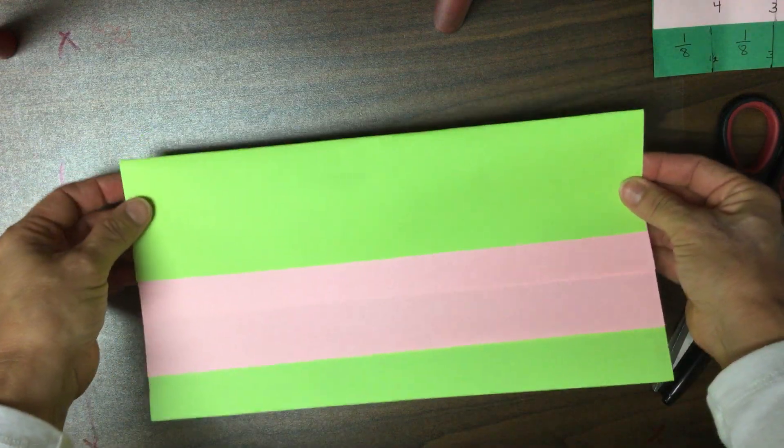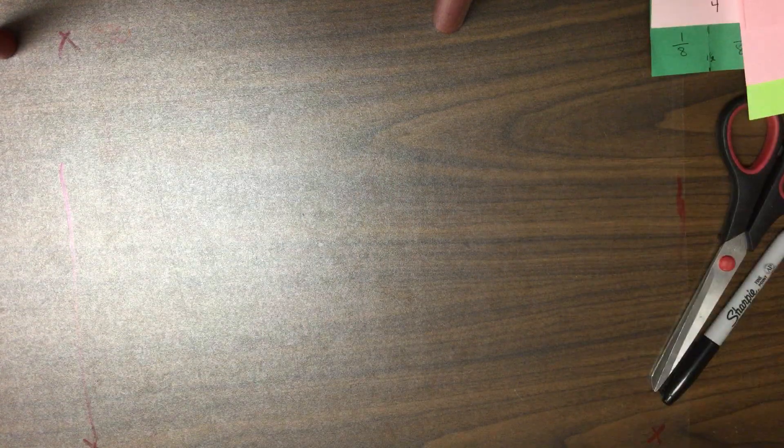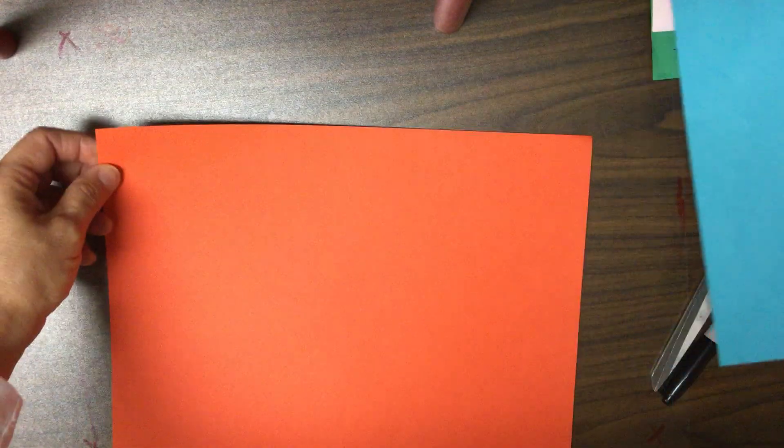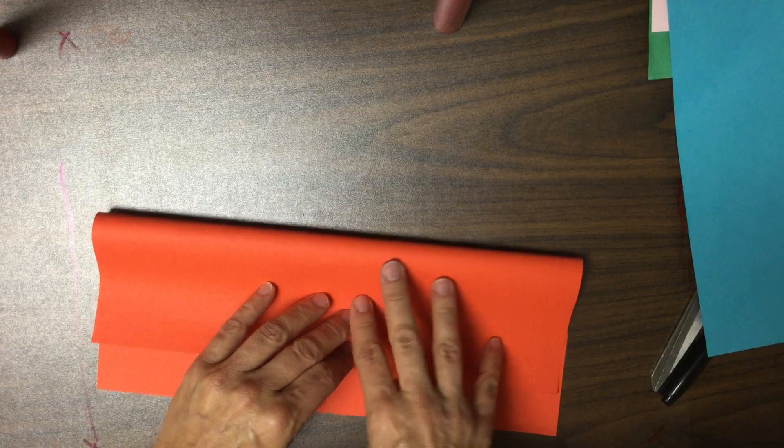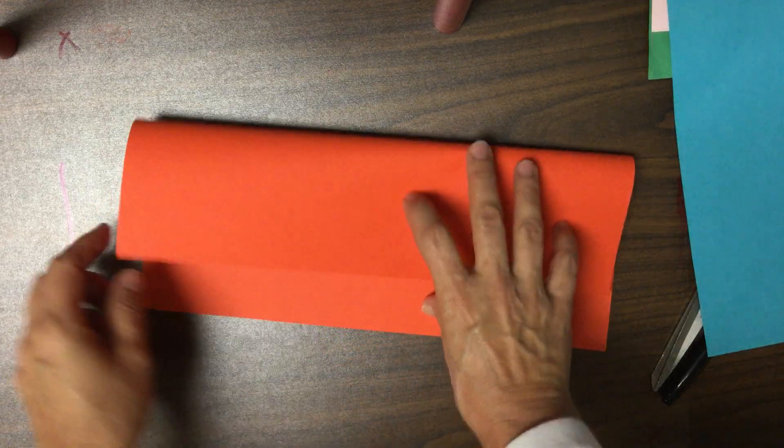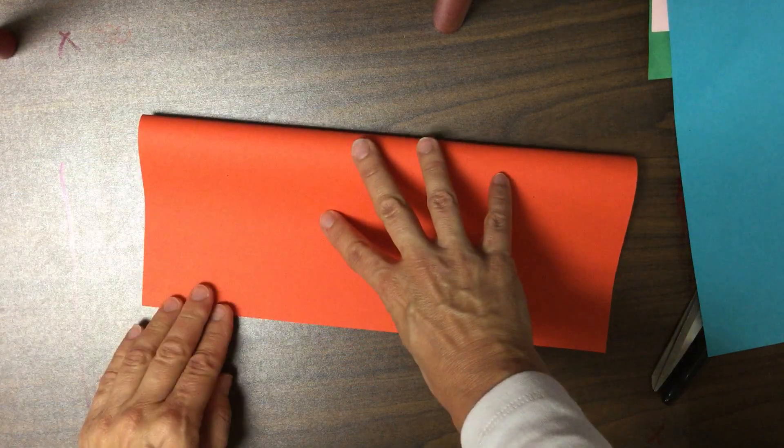I'm going to do the same thing with my other two papers. I'm going to start with my orange paper and I'm going to fold it down. I'm going to leave about an inch here on the edge and I'm going to make sure my edges are straight.